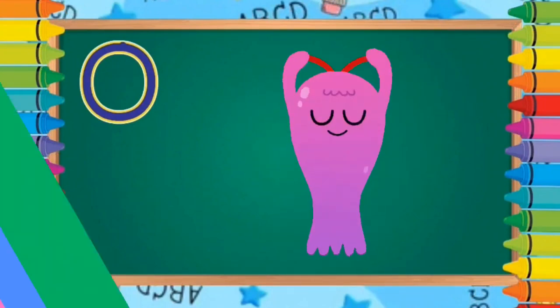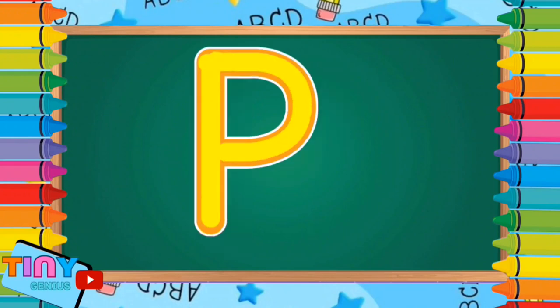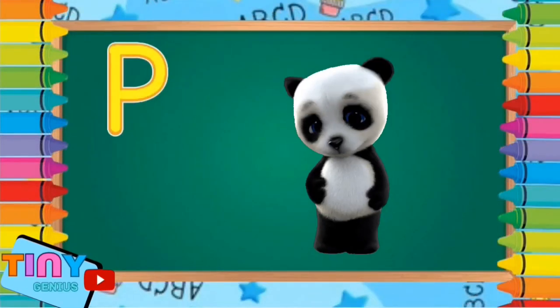Let's write the next one, letter P. Pull down, go to the top and around in. P is for panda.